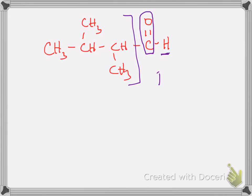This tells us that it has a general structure of R, C double bond O, H. And that general structure is one of an aldehyde. And so we are going to name this as an aldehyde.